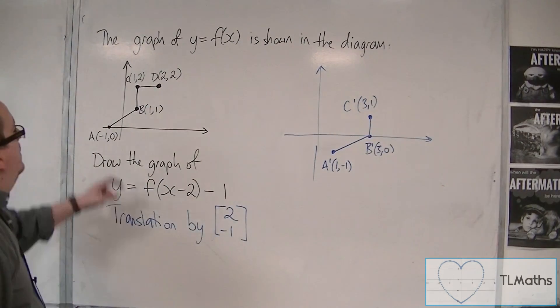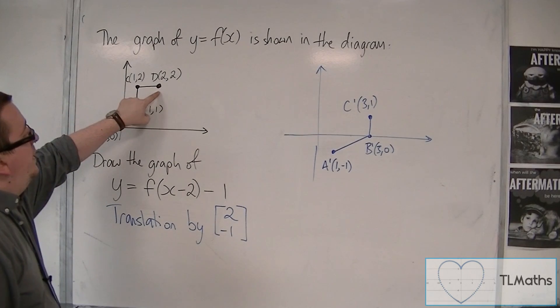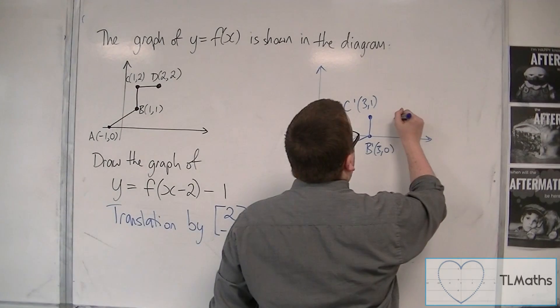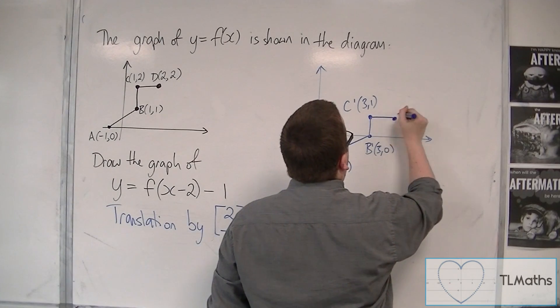And then this point here was at 2, 2, so that's gone to 4, 2, then 4, 1. And that can be D prime.